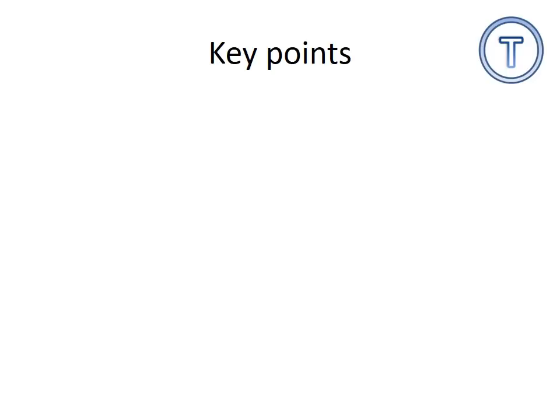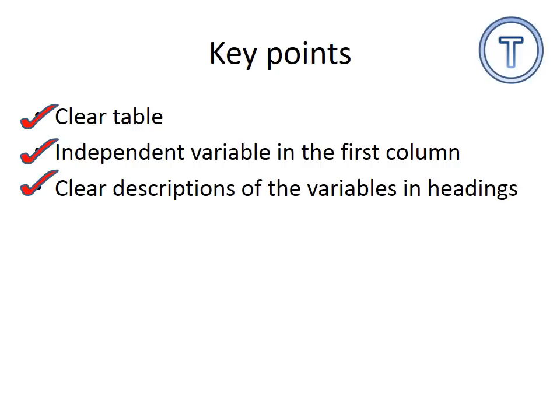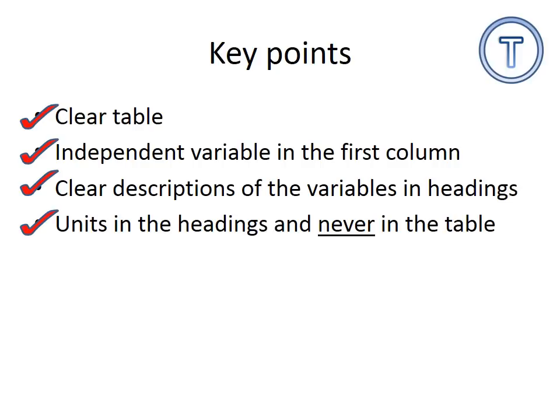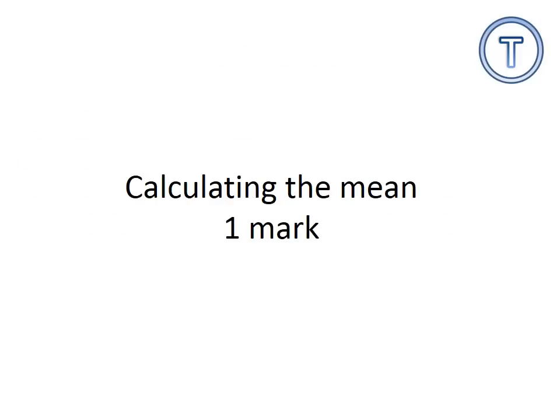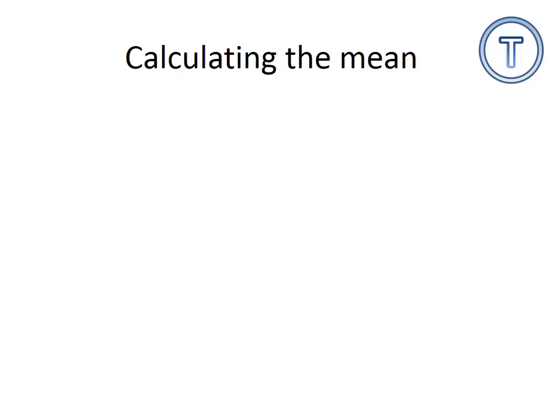Key points again from the mark scheme. Make sure you can get these points. Clear table. Independent variable in the first column. Clear descriptions of the variables in the headings. The units are in the headings and never in the table. And in this case, you also had to calculate a mean for a mark.